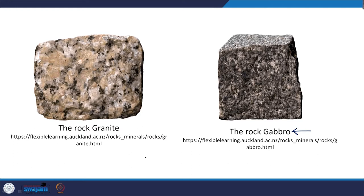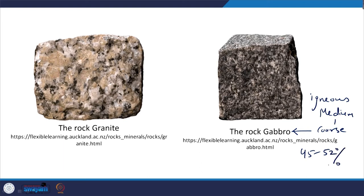Gabbro is a dense intrusive igneous rock — the plutonic equivalent of basalt. It is dark gray to black with a medium to coarse grained texture. Its silica content is 45 to 52 percent, smaller than that of granite. It is used as aggregate and fill in construction and road construction.